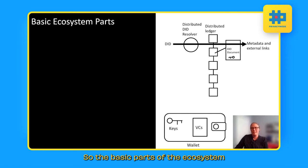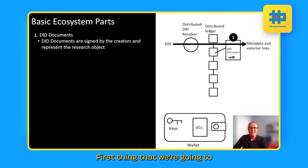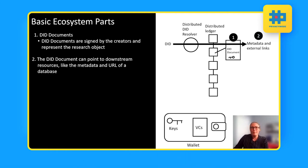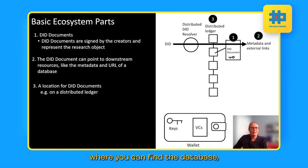So the basic parts of the ecosystem for decentralized identifiers that I'm describing here. First thing that we're going to have is what we call the DID document. That's the object that's signed by the creator and it represents the object. It's going to be the one that has the links to downstream resources like the associated metadata of the object, the URL of where you can find the database, and so on. And the location of this DID document in this example, it's on a distributed ledger.